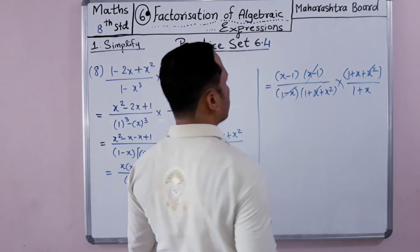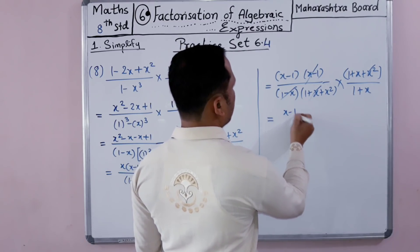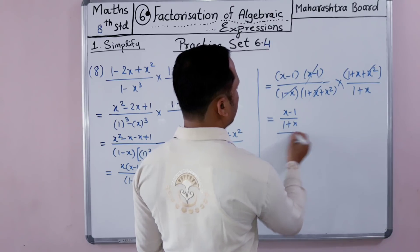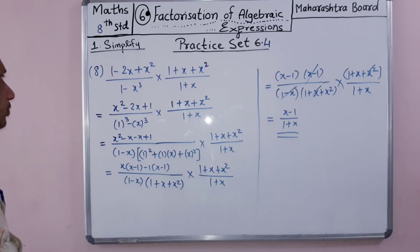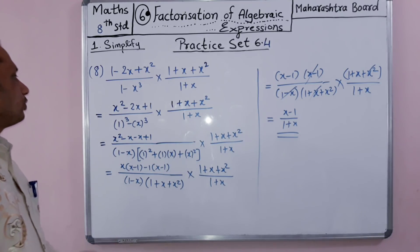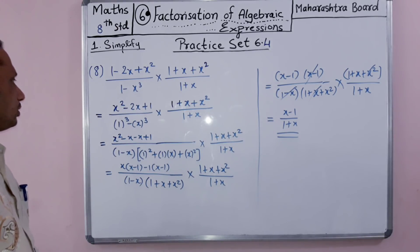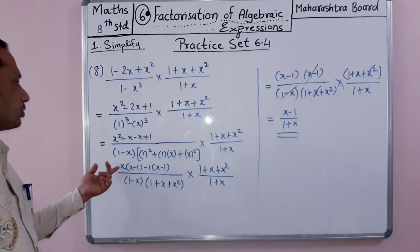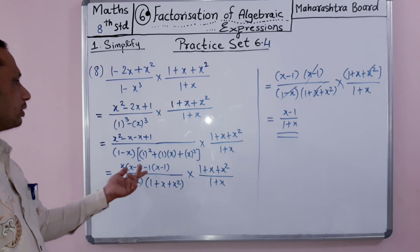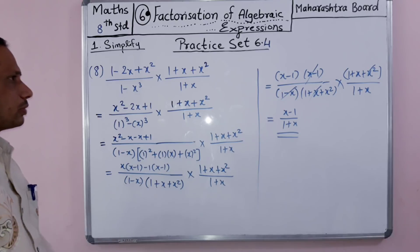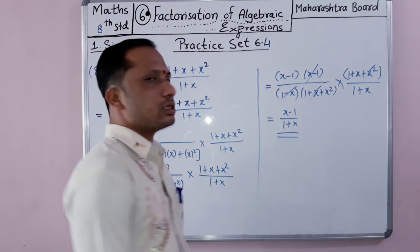After cancellation, what remains is x minus 1 over 1 plus x. Note that x minus 1 equals negative of 1 minus x, so these cancel appropriately. The final solution for the eighth problem is x minus 1 over 1 plus x. We factorize the given numbers, write them in the proper format, take the common factors out of the brackets, and cancel them to get the solution.